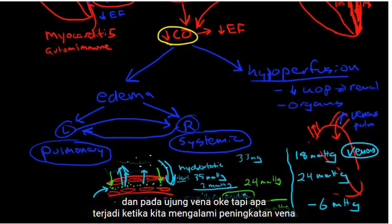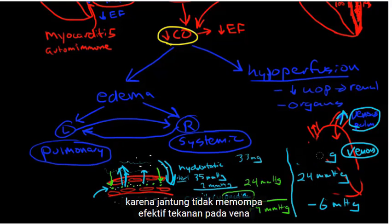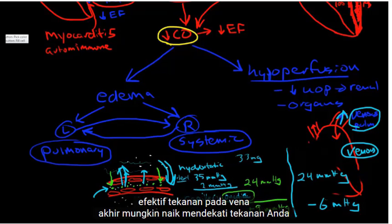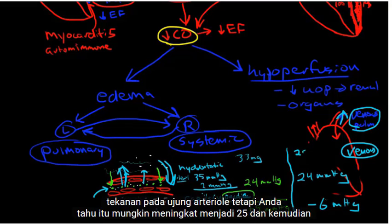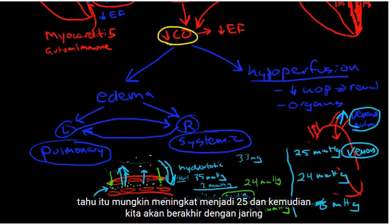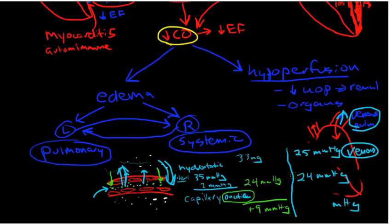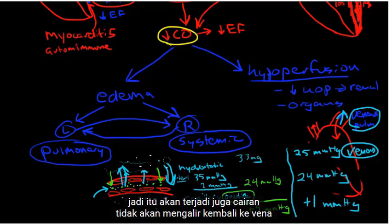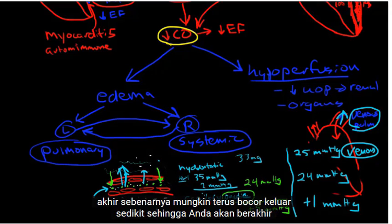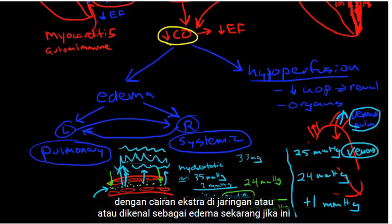What happens when we have increased venous pulmonary pressures? Because the heart is not pumping effectively, the pressure on the venous end increases — it may rise to about 25 mmHg. Then we end up with a net filtration pressure of about +1. Fluid is no longer flowing back in on the venous end; in fact, it may continue to leak out. So you end up with extra fluid in the tissue — edema.